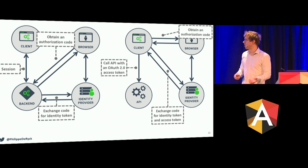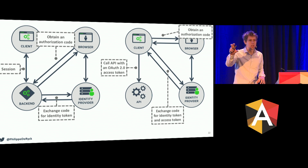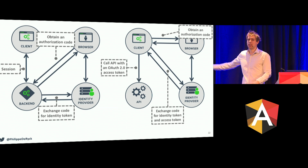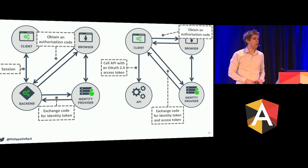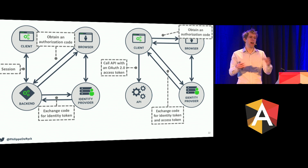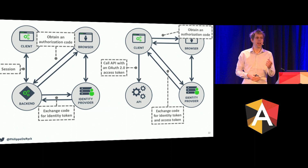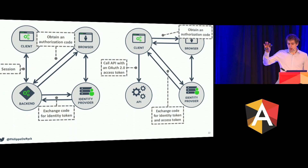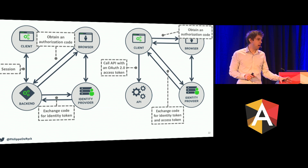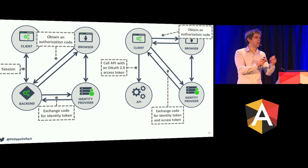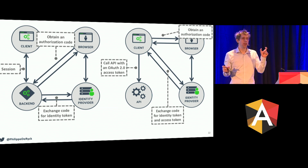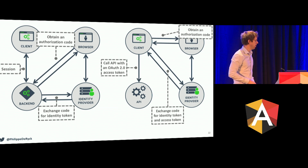What we're going to do is not only get an identity token, but also get an access token. With that access token, we can access APIs on behalf of the user. If this would be a use case with GitHub as the identity provider, we'd get an access token allowing us to access GitHub's APIs in the name of the user — get a list of repos, do whatever features exist on those repos. OIDC is actually built on top of OAuth, so we were already using OAuth when we were using OIDC. We just use one additional feature allowing us to get an access token as well.